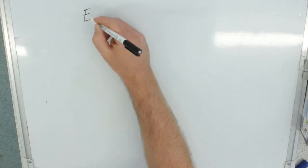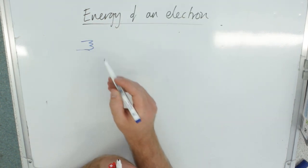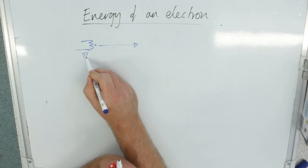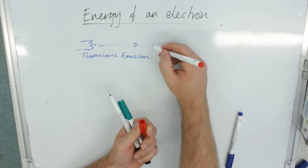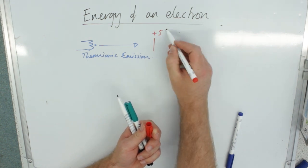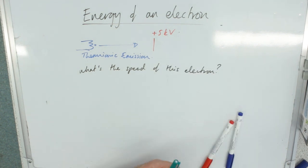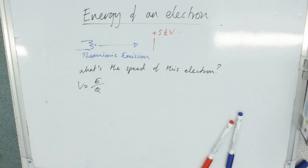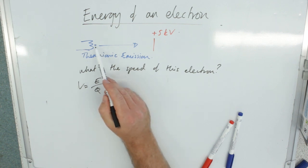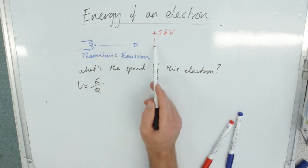So energy is a really useful workaround. We've got our filament, which is hot, and it's doing thermionic emission. And it's being accelerated towards an anode, which is at plus 5 kilovolts. What's the speed of this electron? Well, we know our definition of voltage is how much energy does each coulomb of charge have. V equals E over Q. So I can actually use this to work out the amount of energy the electron has there. It's negative. It's been attracted to that. It's gaining kinetic energy.